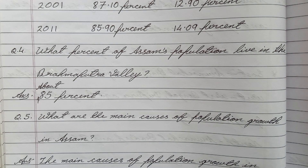Question number four: What percent of Assam's population live in the Brahmaputra Valley? Answer: About 85 percent.